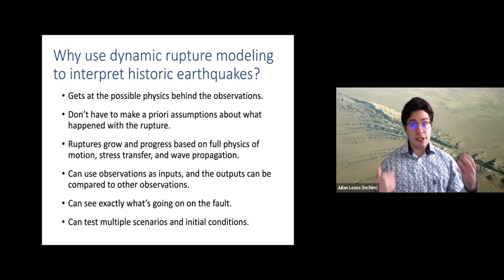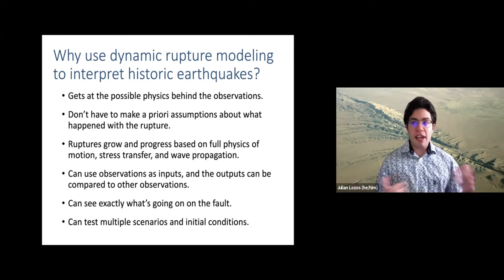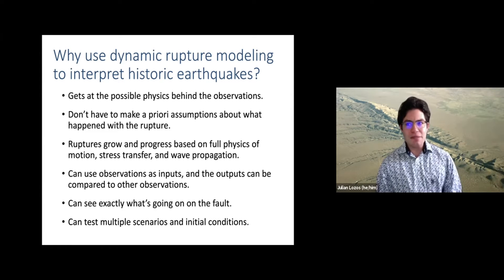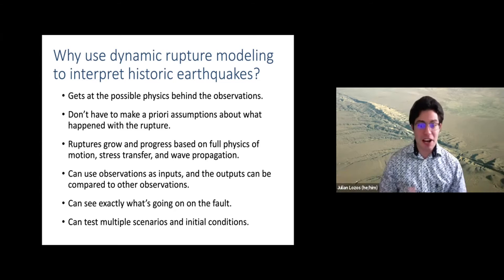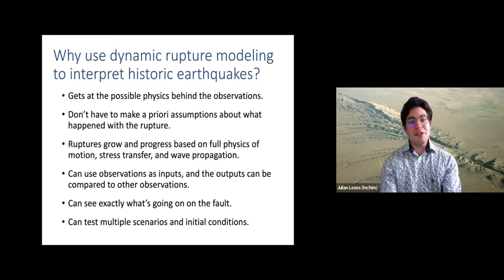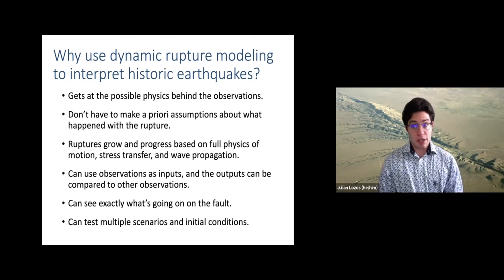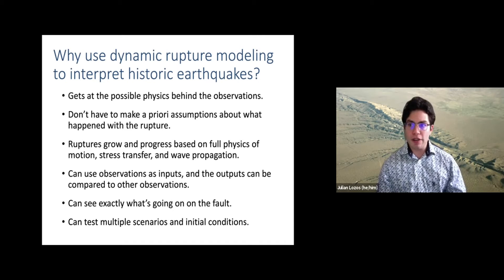I can use all kinds of observations to set up the initial conditions. Once I have the outputs of my models, I can compare them back to other observations. Because I can make the initial conditions literally anything — I could make there be an 11.5 earthquake on a five kilometer long fault if I really wanted to — that's why using observations as inputs and then comparing outputs to observations is a really important constraint, whether those observations are really dense instrumental records or whether there are just a few people describing what fell down.